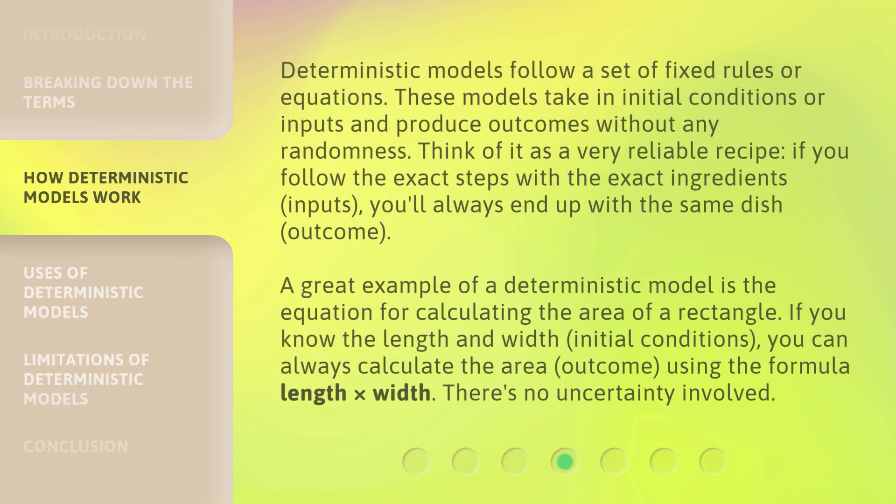Deterministic models follow a set of fixed rules or equations. These models take in initial conditions or inputs and produce outcomes without any randomness. Think of it as a very reliable recipe — if you follow the exact steps with the exact ingredients (inputs), you'll always end up with the same dish (outcome). A great example is the equation for calculating the area of a rectangle: if you know the length and width (initial conditions), you can always calculate the area using the formula length times width. There's no uncertainty involved.